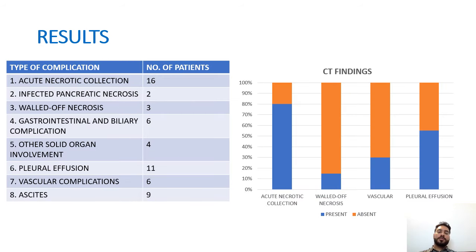Acute necrotic collection was the most common complication, seen in 16 patients. Infected pancreatic necrosis with air foci was seen in 2 patients. Ball of necrosis, a rare complication, was seen in 3 patients. Gastrointestinal and biliary complications were seen in 6 patients, solid organ involvement in 4 patients, pleural effusion in 11 patients, vascular complications like splenic or portal vein thrombosis in 6 patients, and ascites in 9 patients.